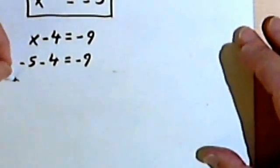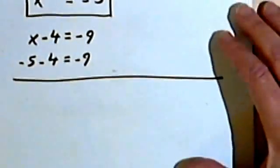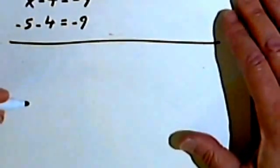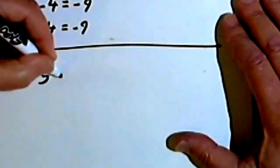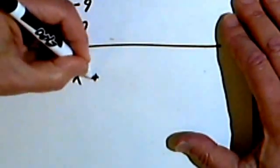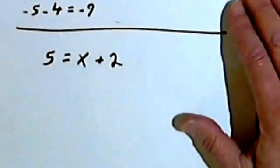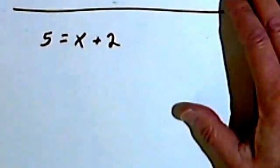Now, it doesn't matter which side your x ends up on. In other words, let's say we have 5 equals x plus 2. Remember, what you want to do is get the x by itself.